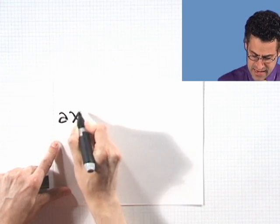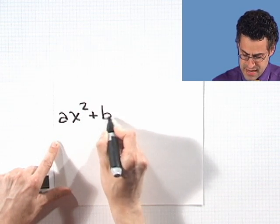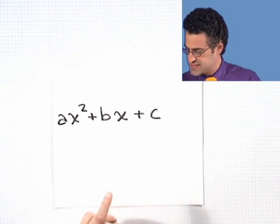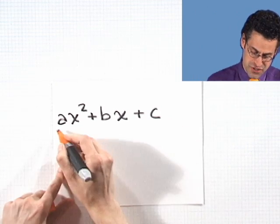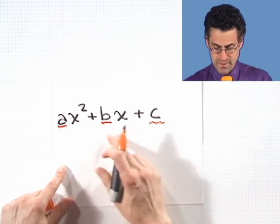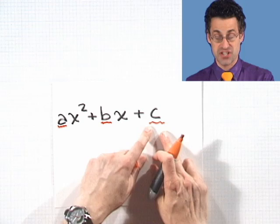Let's take a look at the most general trinomial we could think of in x. That would have the form, if you were to write it out, as a coefficient times x squared plus a coefficient times x plus just the constant term. So it might look something like this: ax squared plus bx plus c, where a, b, and c represent the coefficients in front of the unknown x, or in this case, the constant term.